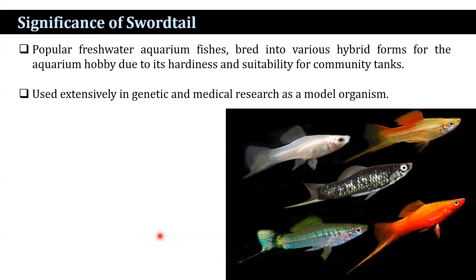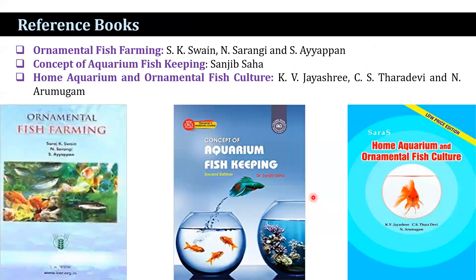Regarding the significance of the swordtail — it is a very popular freshwater aquarium fish, and its maintenance cost is very low. Swordtails have been bred into various hybrid forms for the aquarium hobby, due to their hardiness and suitability for community tanks, making them a great choice for beginners. They are also used extensively in genetic and medical research as a model organism.